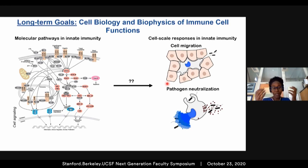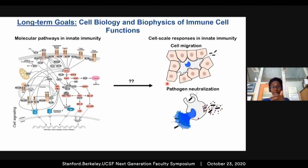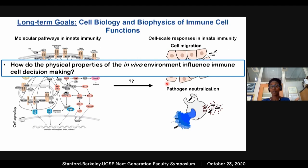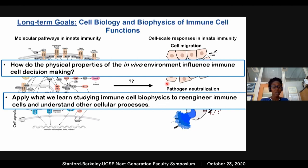Moving forward, my lab will keep in mind this idea of bridging the gap between molecular and cell-scale function. We will work toward understanding how the physical properties of the in vivo environment influence immune cell decision-making, and I hope we will apply what we learned studying immune cell biophysics to re-engineer immune cells and understand other biological processes involving similar cellular functions. I would like to end by thanking the Waterman and Piel labs, especially Claire and Mathieu, my mentor and my collaborator. Thank you very much for your attention.